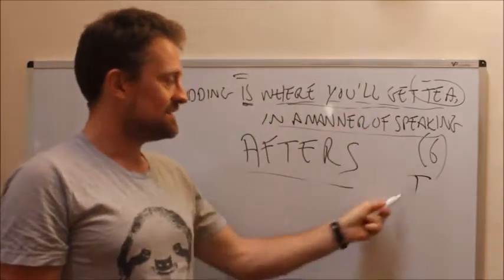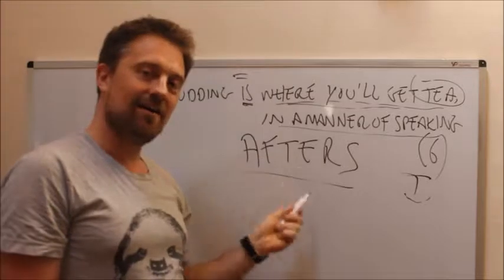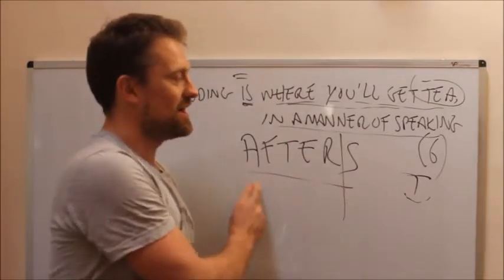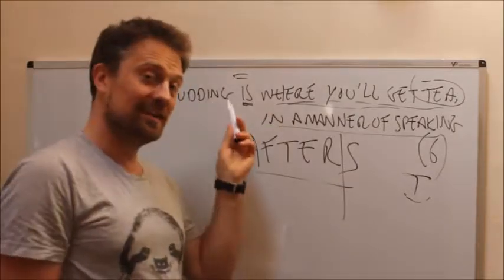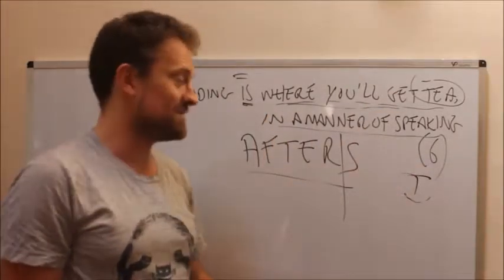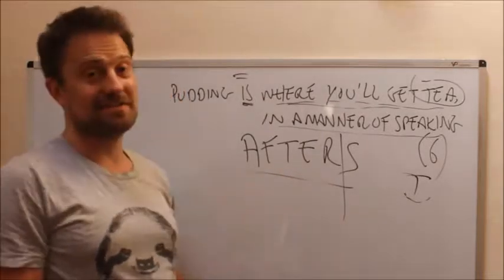Where do you get T? You get T after S in the alphabet. T comes after S. So pudding, afters, is where you'll get T in a manner of speaking. So you get T after S.